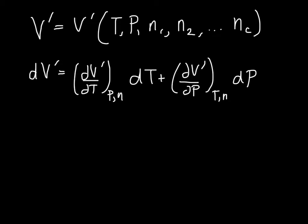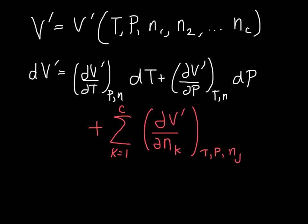And then the term that is most interesting to us right now is this last one. So, we're going to sum from K equals 1 up to C, where C is the number of components that we have in the system. dV dN sub K. So, how the volume of the system changes with more K. And now keeping the temperature, the pressure, and the number of moles of the other kind, where J is not equal to K, constant.